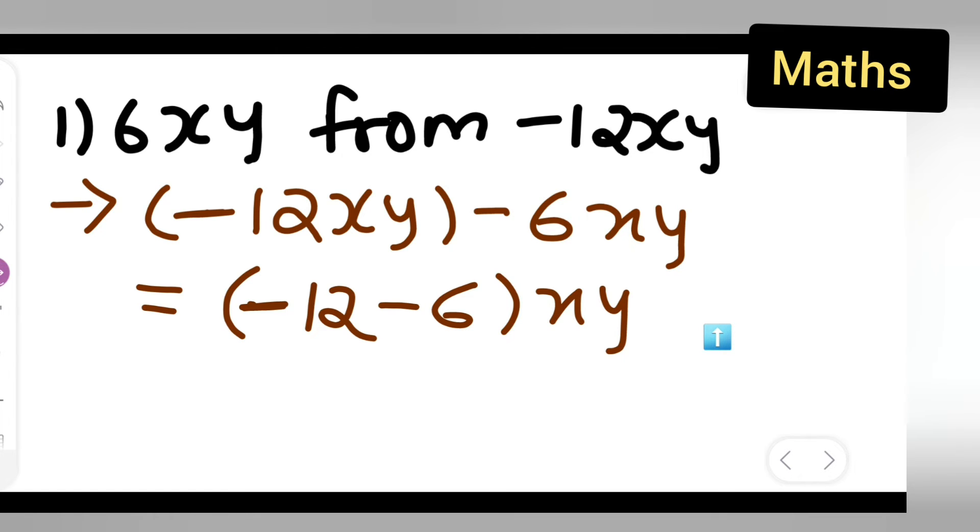Obviously, in both the terms, xy is common. So what I can do is add these numbers now. You will get -12 minus 6, which gives you -18. So write down -18.